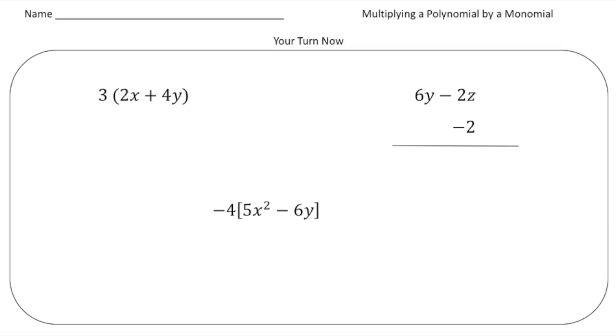All right, welcome back. Let's see how I do these problems. So here we have 3 times 2x plus 4y. So I'm going to distribute the 3 to both the 2x and also the 4y. So that's going to be 6x plus 12y. That's that one.